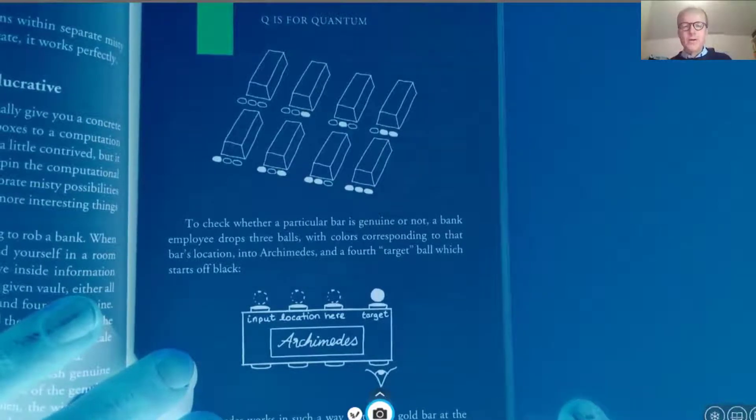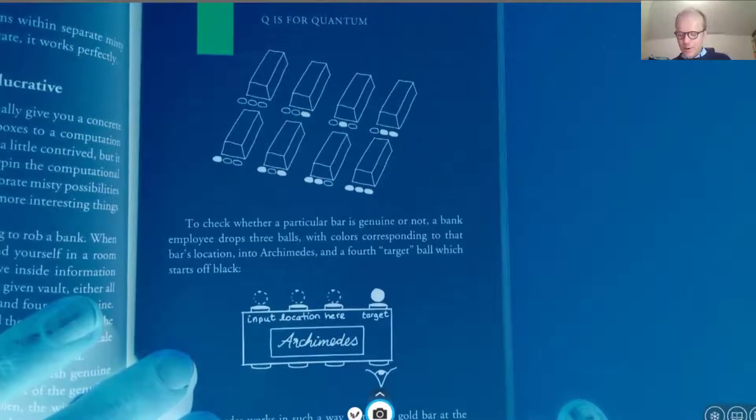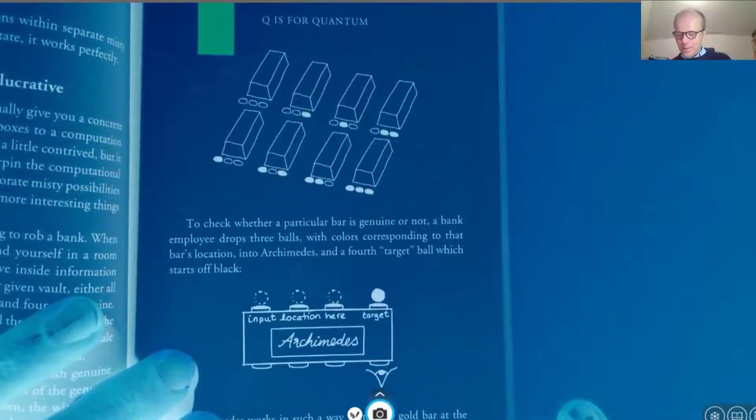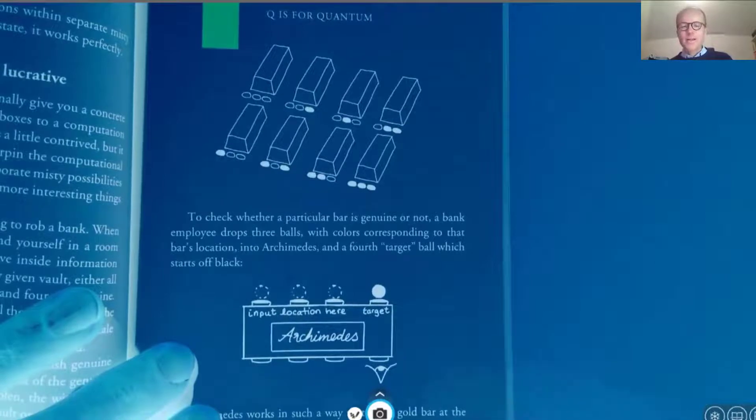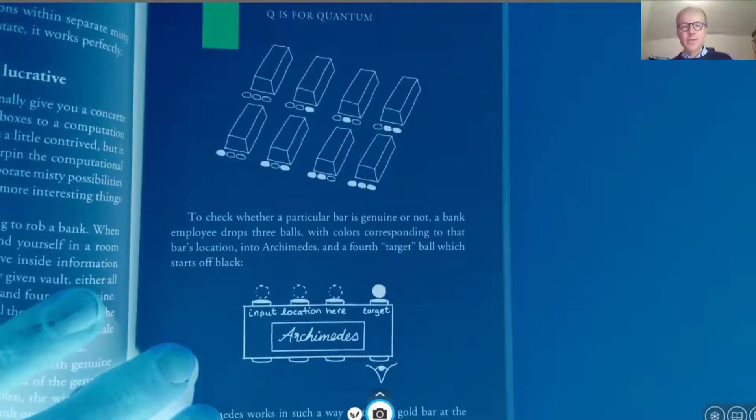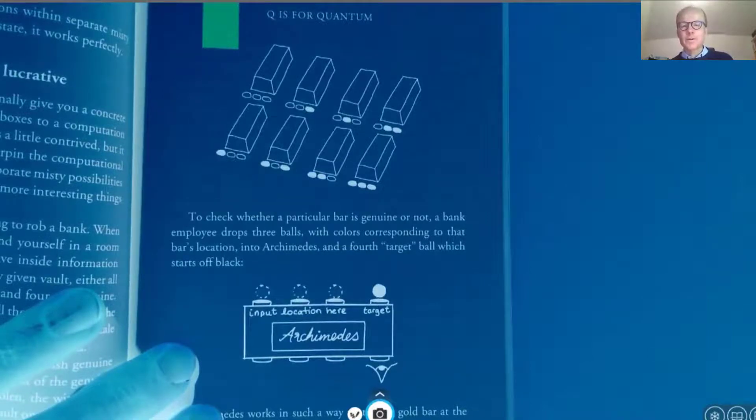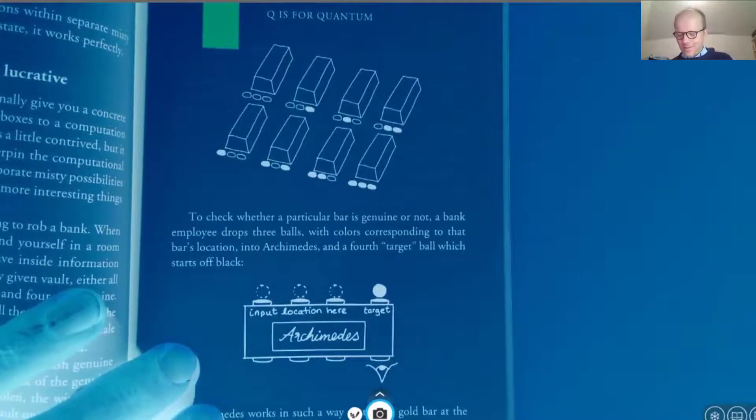To check whether a particular bar is genuine or not, a bank employee drops three balls with colors corresponding to that bar's location into Archimedes and the fourth target ball which starts off black. So here you have this little machine, Archimedes, and say you want to check whether the bar in the top right corner is genuine or fake. The bar on the top right is labeled with a white and two black circles or discs. Then you insert into this machine from the left a white ball and two black balls and then on the very right always a black ball.